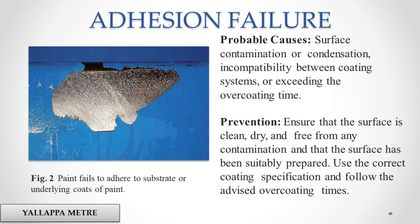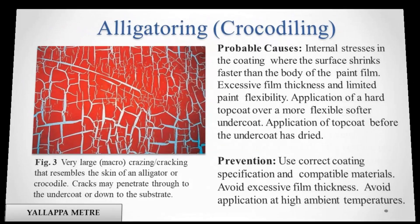Adhesion Failure. Probable causes: surface contamination or condensation, incompatibility between coating systems, or exceeding the overcoating time. Prevention: ensure that the surface is clean, dry, and free from any contamination and that the surface has been suitably prepared. Use the correct coating specification and follow the advised overcoating time.